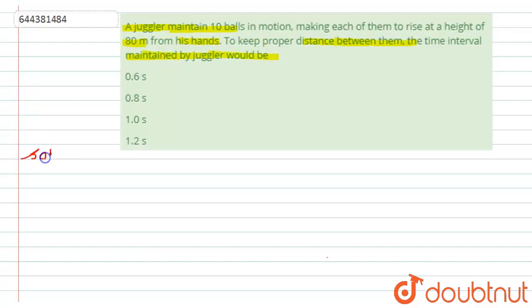Actually in this question it is given that a juggler is throwing 10 balls in upward direction up to a height of 80 meters.